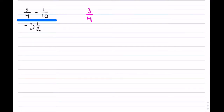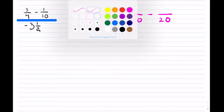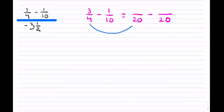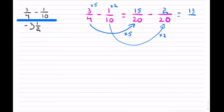I have 3 over 4 minus 1 over 10. I need a common denominator between these two — a common denominator is 20. 4 goes into 20 five times, so that's my multiplier, and that becomes 15. And 10 goes into 20 two times, so that is my multiplier here. That gives me an answer of 13 over 20.